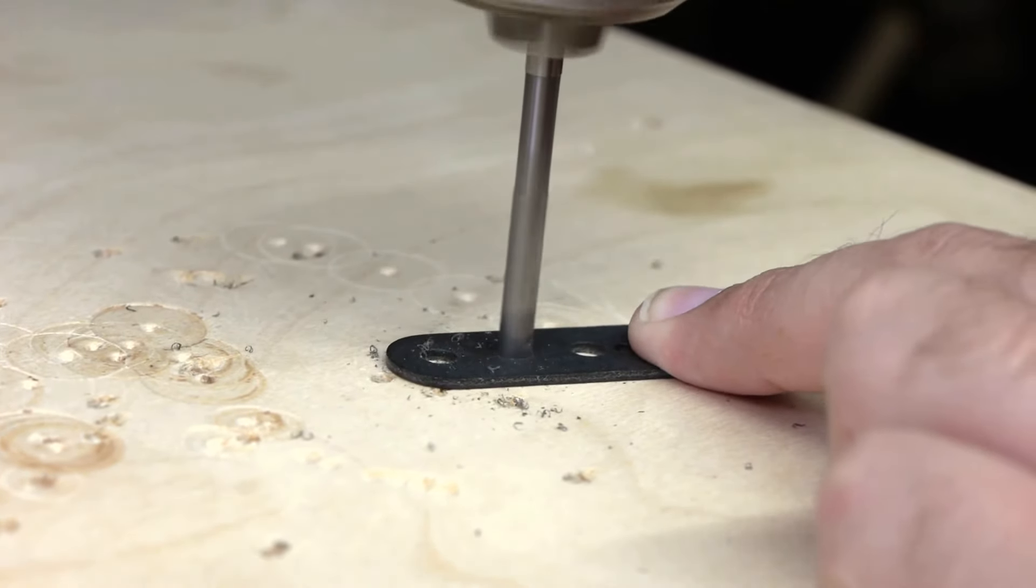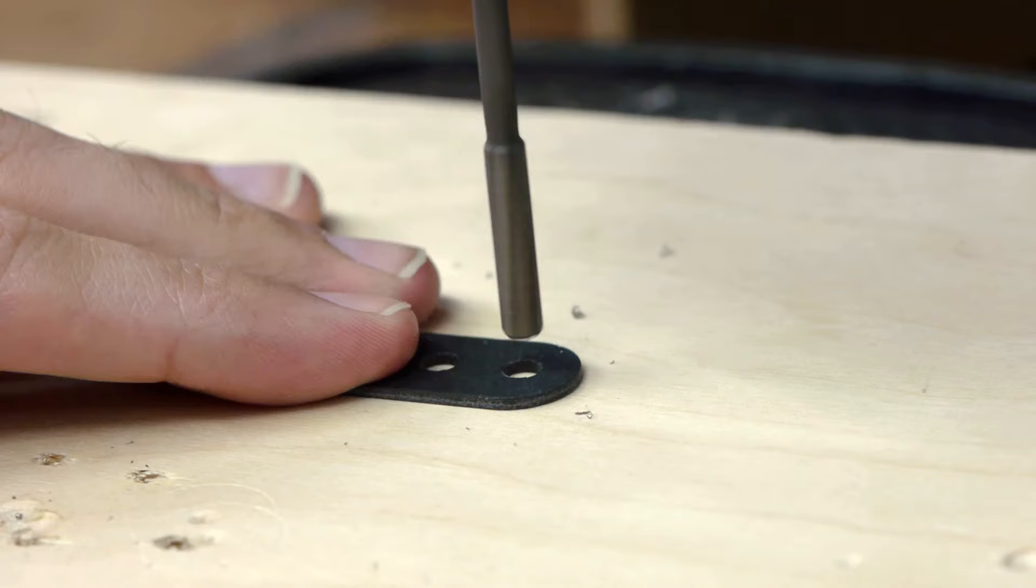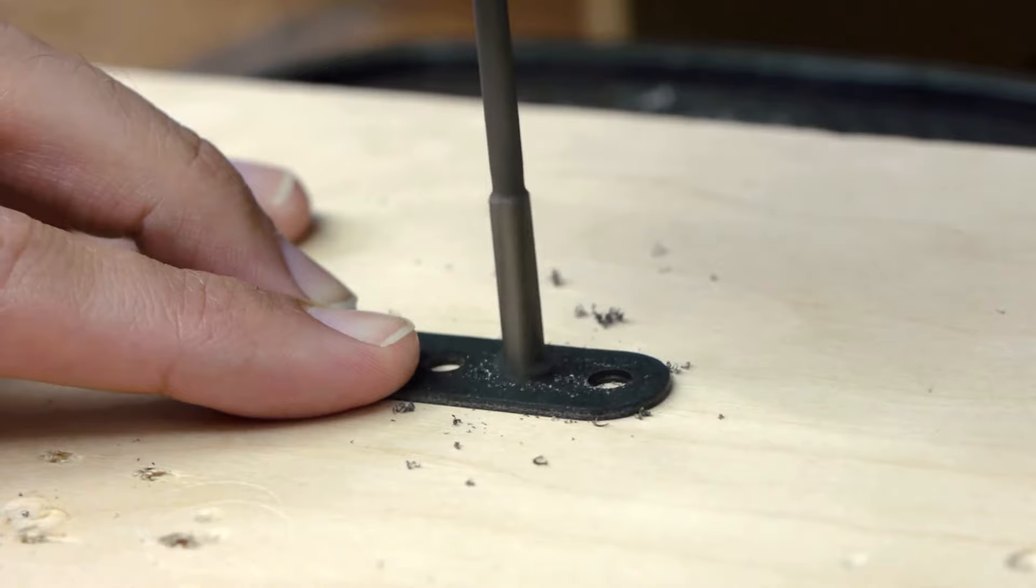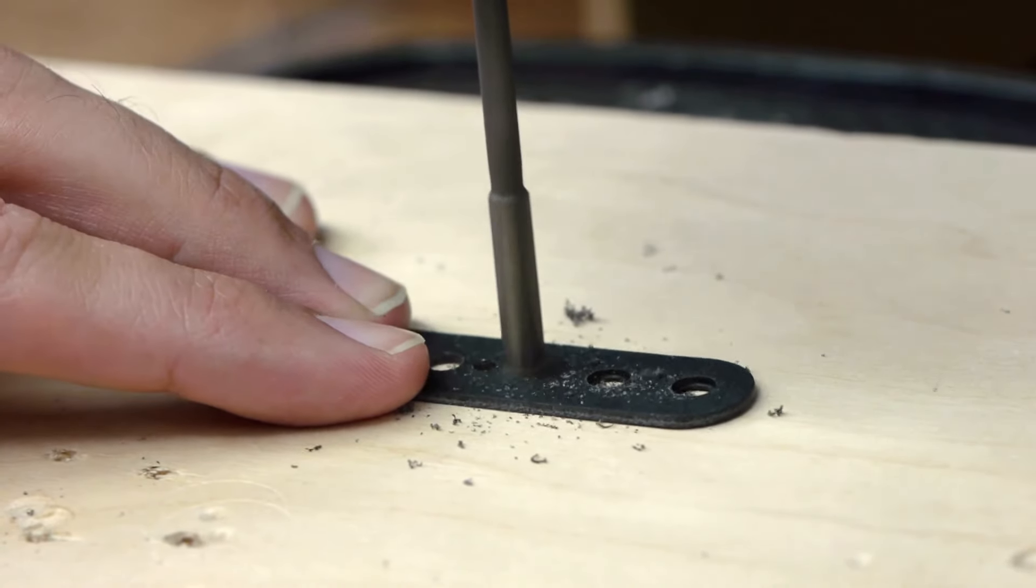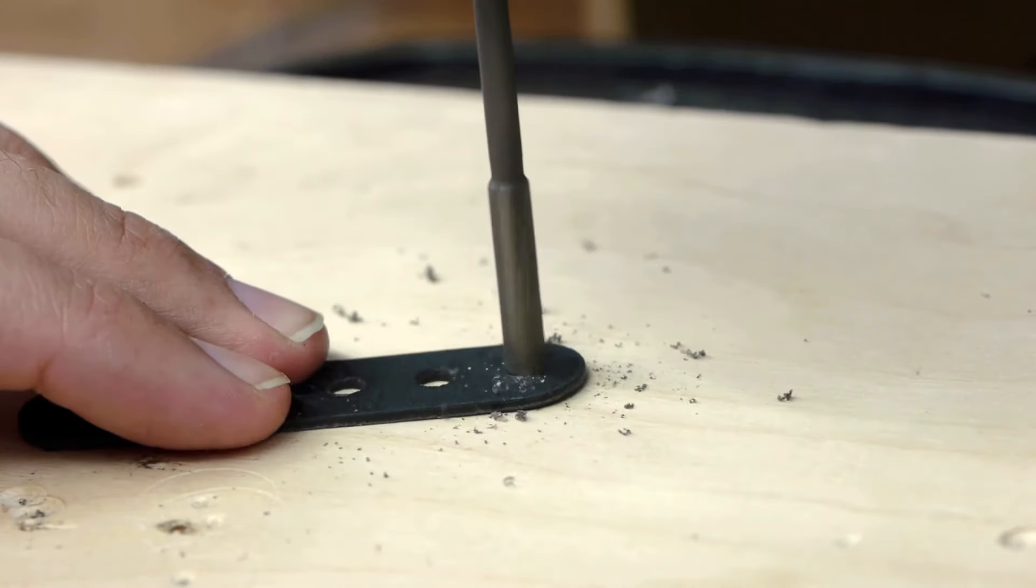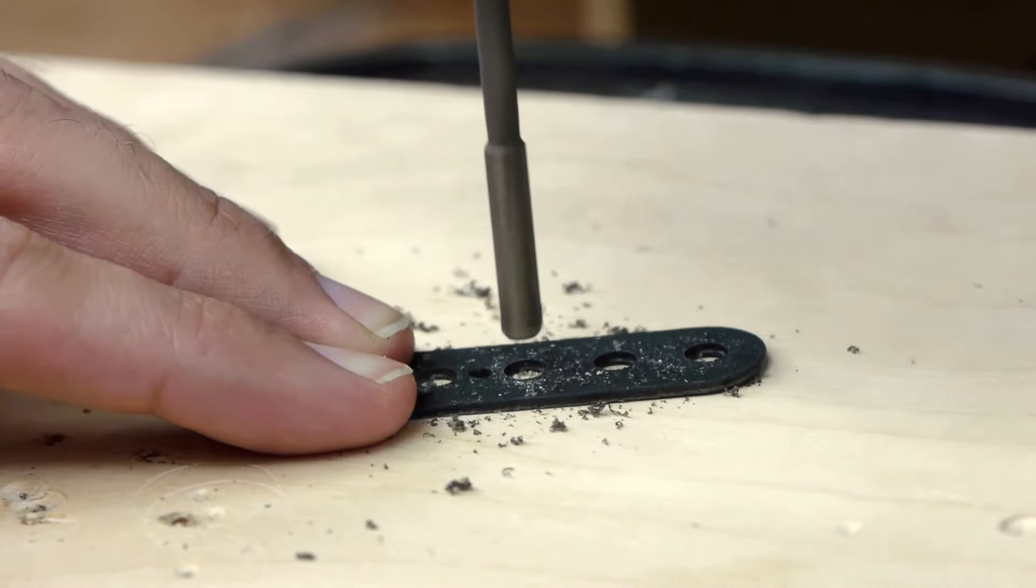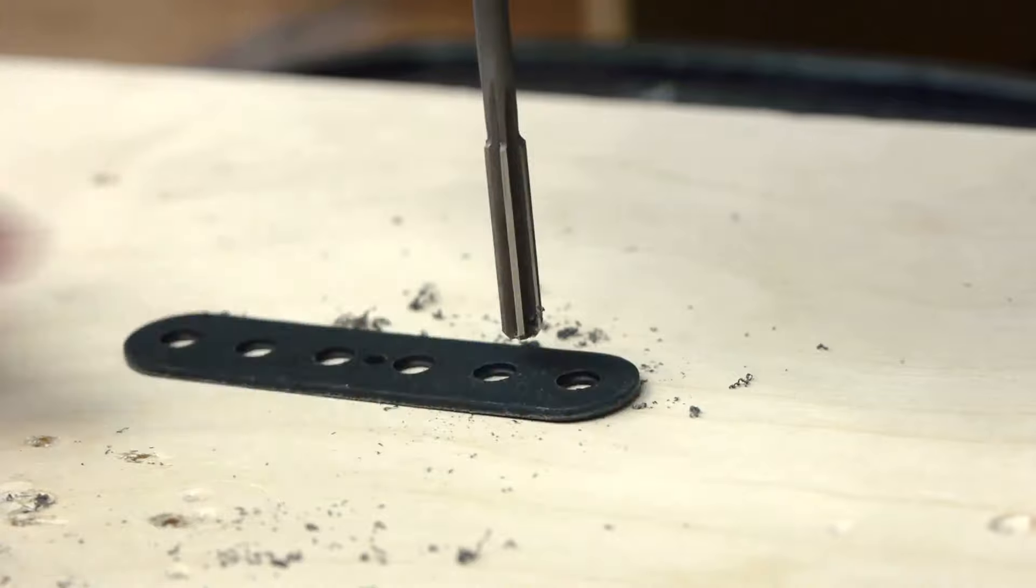The tiny amount of fiberboard the reamer removes actually goes a long way in preventing the top flatwork from flaring up around the magnets, which not only doesn't look good but can also prevent the pickup cover from seating properly. It also allows a little more surface area for the super glue to wick in, which I'll be using to secure the magnets in the flatwork.